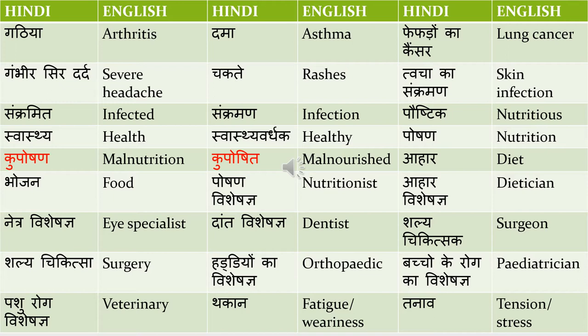The first word is 'gutia,' which means arthritis. You don't have to translate arthritis into gutia, but the reason you should know it is because they might use gutia in the Hindi dialogue even before the doctor has said arthritis. For example, the patient might ask: 'Doctor sahab, mujhe kya hua hai? Kya yah gutia ki bimari hai?' So if you don't know what gutia means, you will be in a fix.